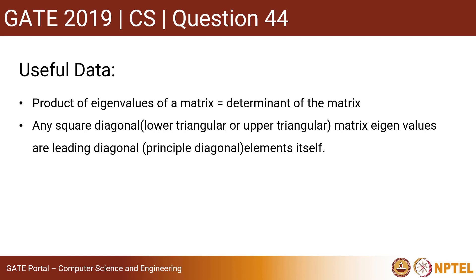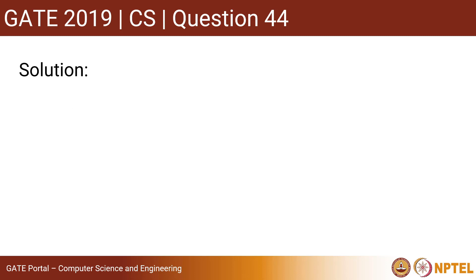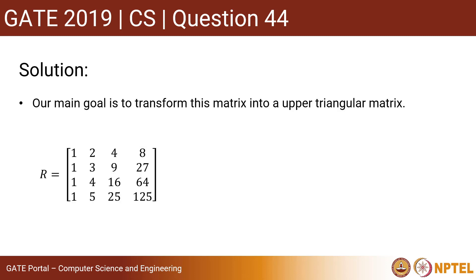For any square diagonal matrix, or lower or upper triangular matrix, the eigenvalues are the leading diagonal elements themselves. Now let's look at the solution. Our main goal here is to transform this matrix into an upper triangular matrix so that we can find the eigenvalues easily.